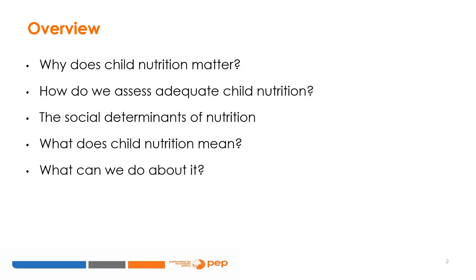The fourth theme asks what the implications of this all are — where does this leave us? The fifth theme covers what we know and what we do not know, what policies and interventions we know work and are affordable, and what are the most important things we do not know that need to be addressed.